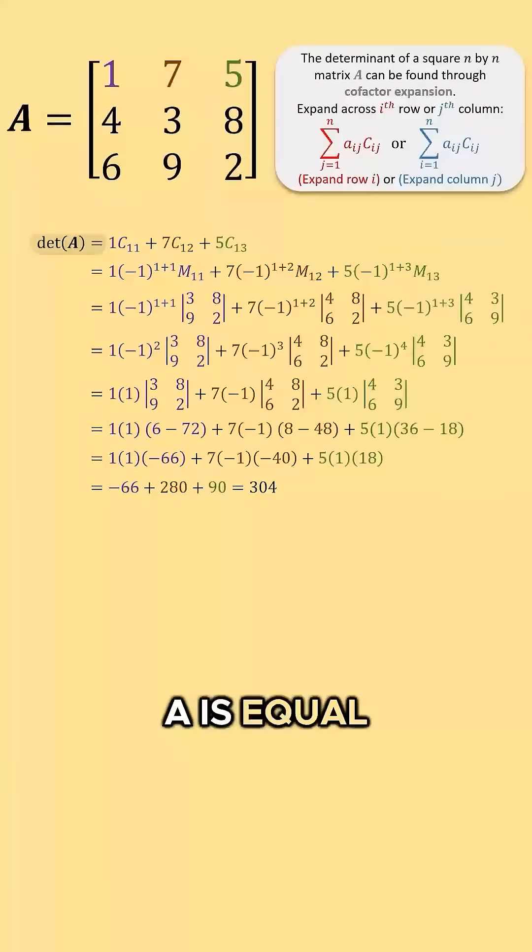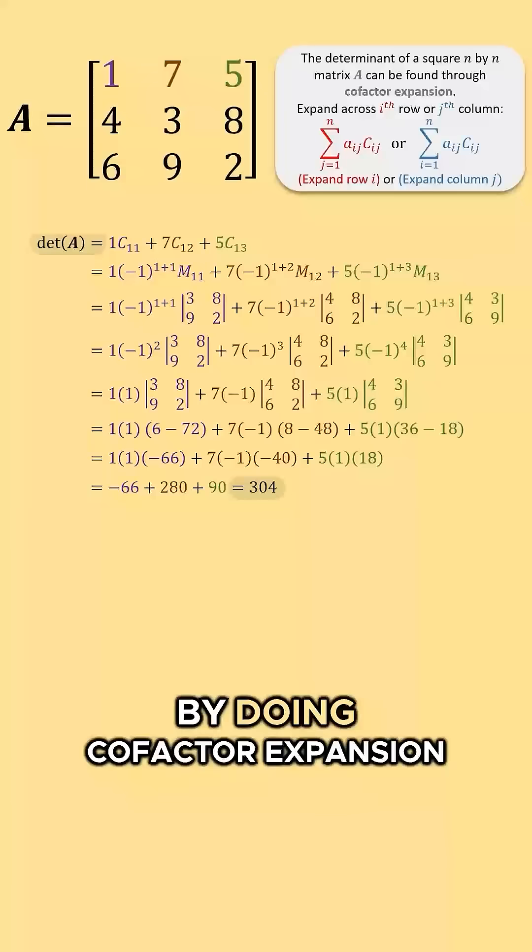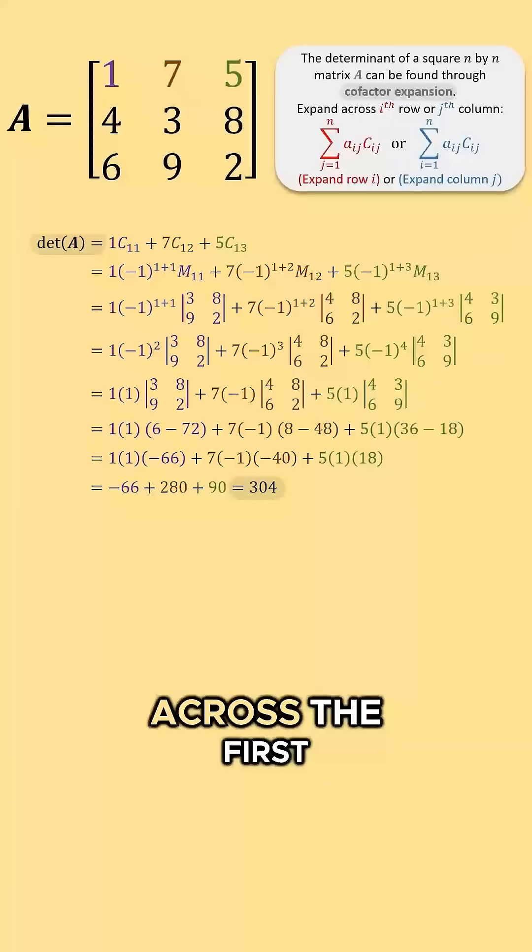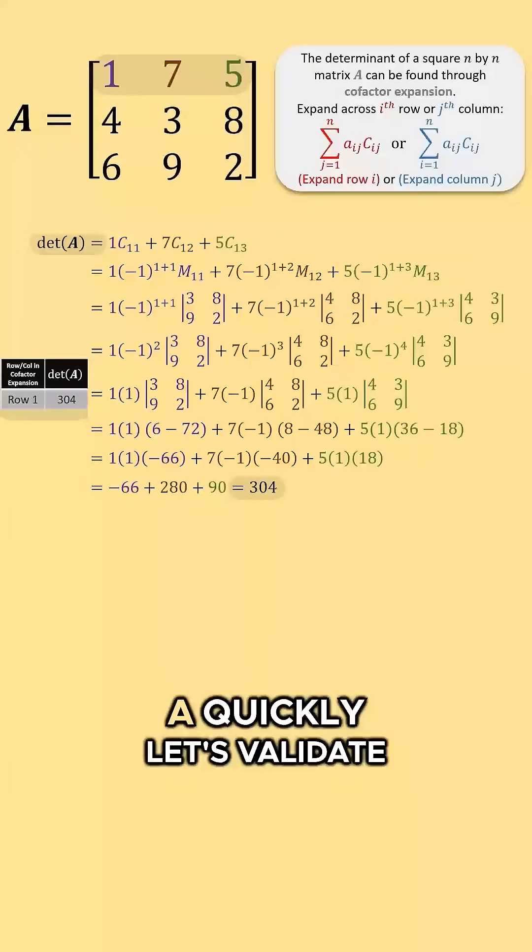The determinant of A is equal to 304. We got that value by doing cofactor expansion across the first row of our matrix A.